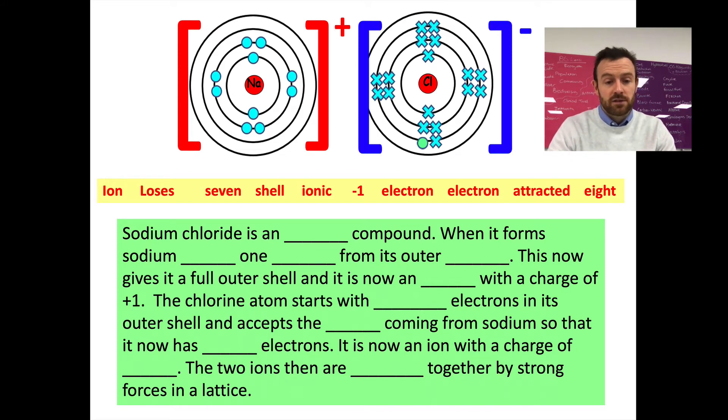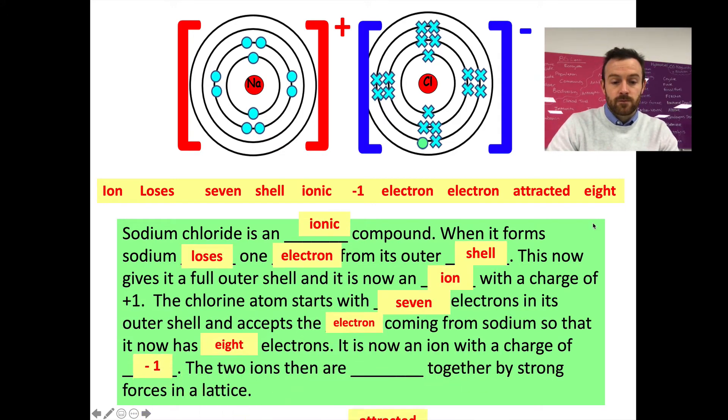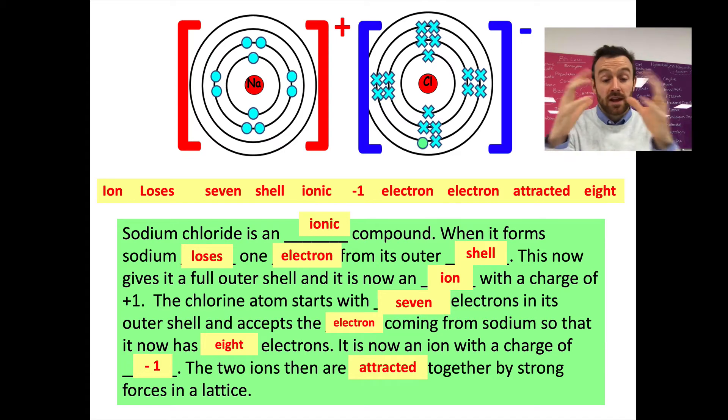Okay. So let's see if you got it right. Just quickly click through. So it's an ionic compound and when it forms, sodium loses an electron from its outer shell. So it gives it a full outer shell and now it becomes an ion with a charge of plus one. The chlorine atom, on the other hand, starts with seven electrons in its outer shell and it sort of takes in or accepts the electron coming from sodium. So that now has eight electrons, which is again, a full outer shell. It's now an ion with a charge of minus one. And then we have the attraction together by strong forces in a lattice.